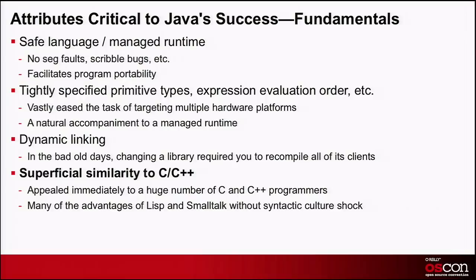A key basic attribute responsible for the success of the Java language was its superficial syntactic similarity to C and C++. It didn't scare the C++ programmers and the C programmers. They could take a look at a Java program and say, yeah, I know what that does — they didn't have to read the language manual. In essence, it was an act of subversion: the Java language snuck the essence of languages like Lisp and Smalltalk by the people who were used to programming languages like C and C++.